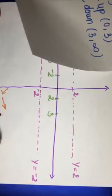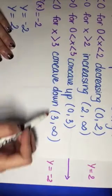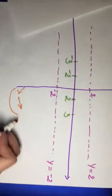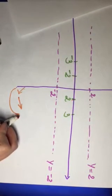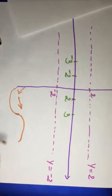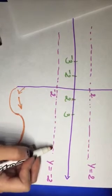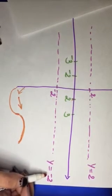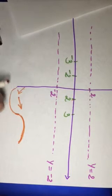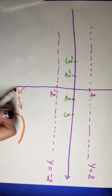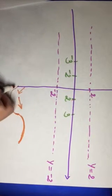The function is increasing from 2 to positive infinity. We have concave up from 0 to 3, so that portion curves upward. Then from 3 to positive infinity the graph is concave down, meaning it curves and approaches the horizontal asymptote at y = -2.